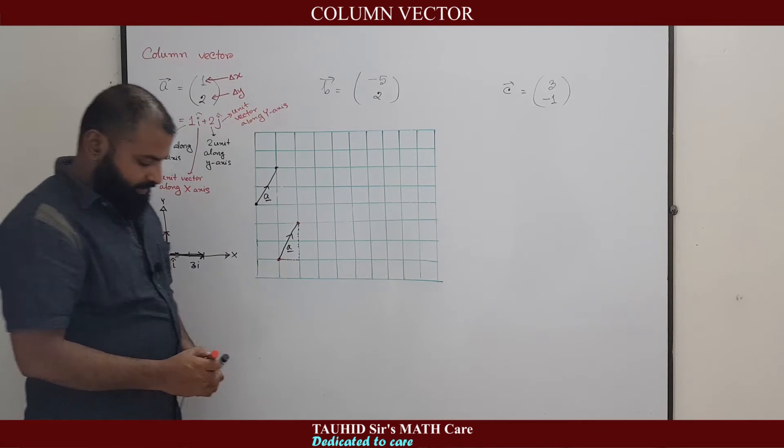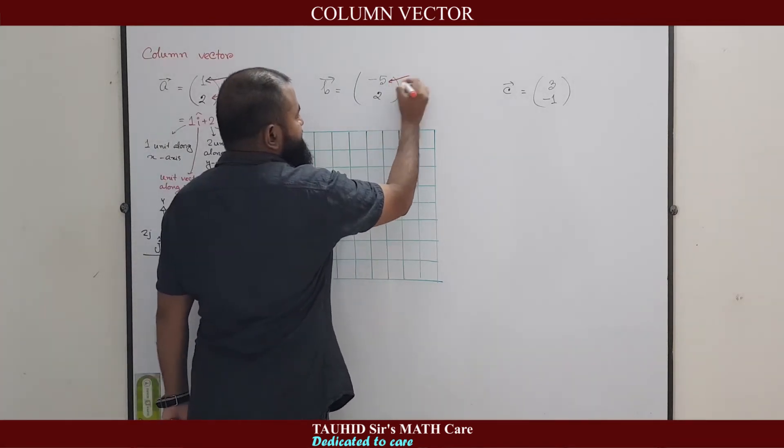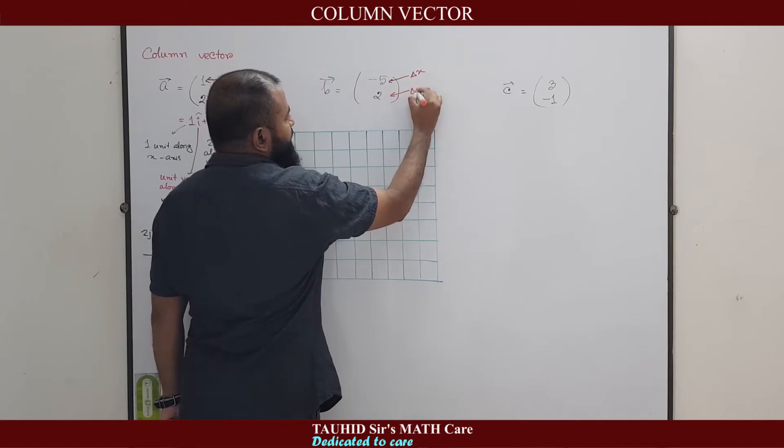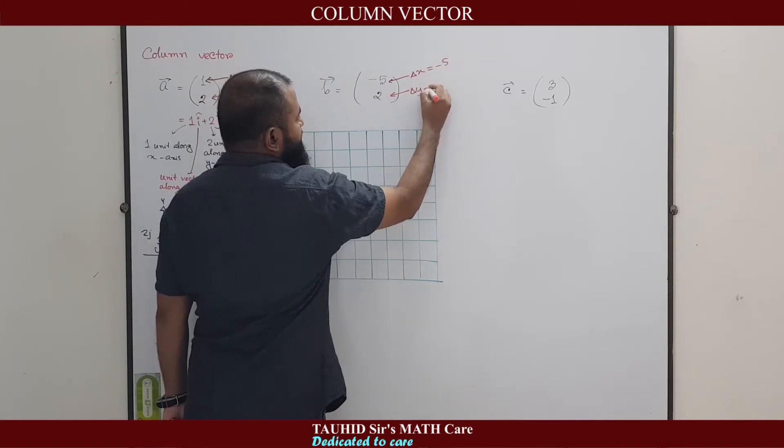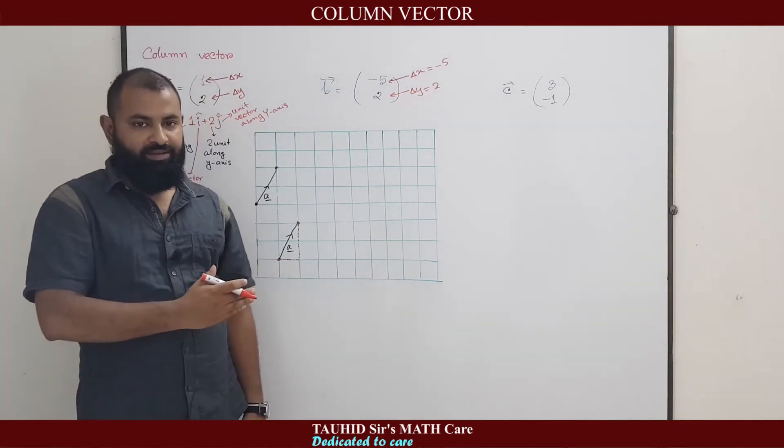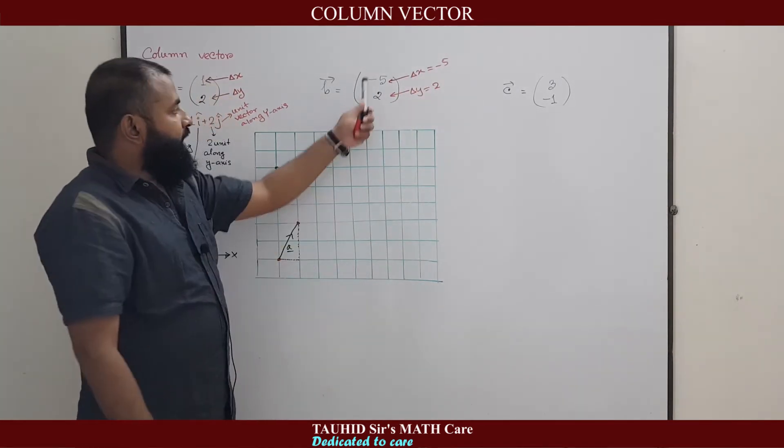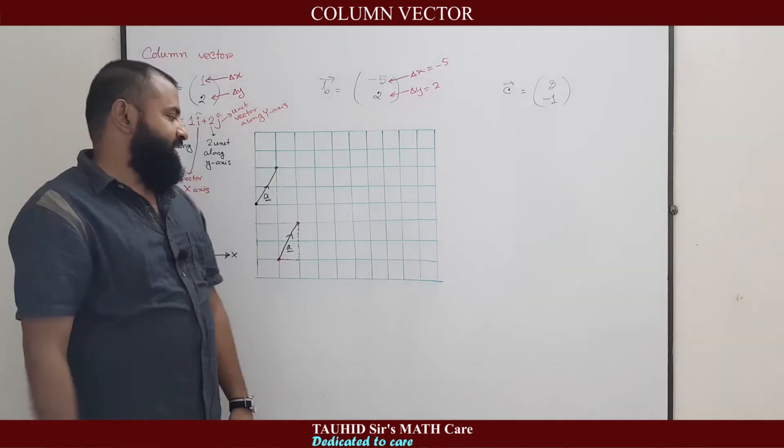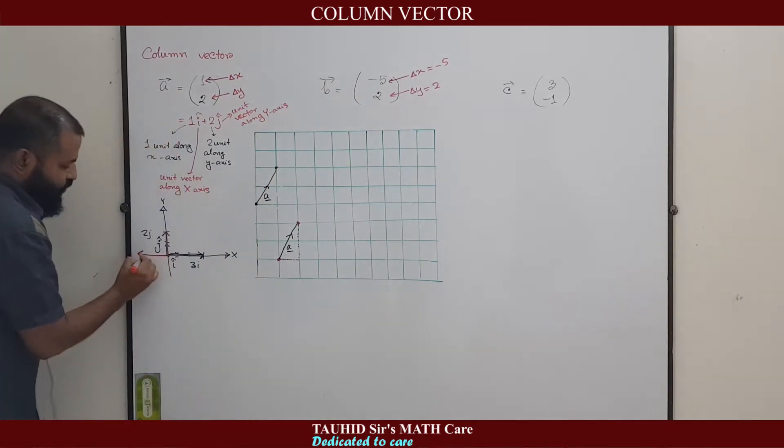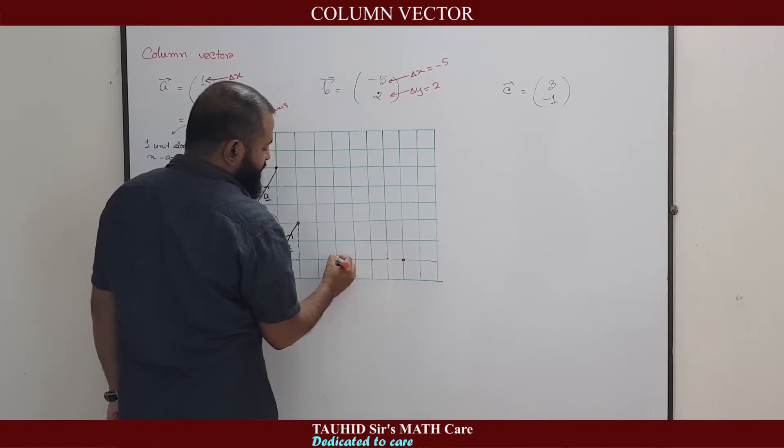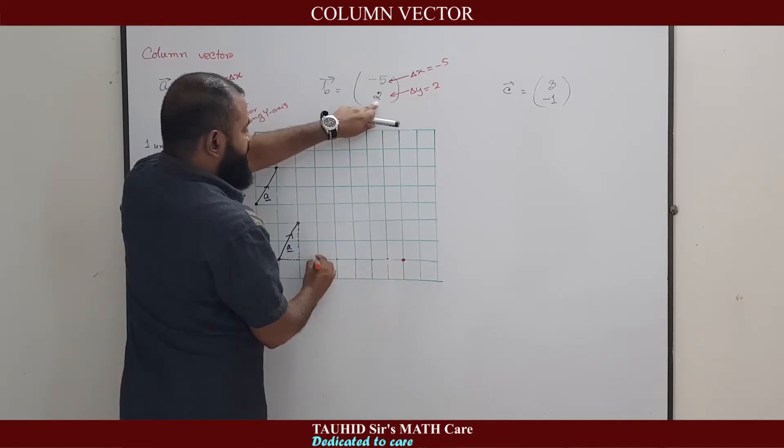Now the vector b. Vector b is minus 5, 2. Here delta x equals minus 5, delta y equals 2. That means it will move five units left side. If this is a negative value, it will move in minus x-axis, that means in this way. So minus 5. Let's start it from here: 1, 2, 3, 4, 5.